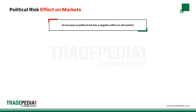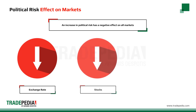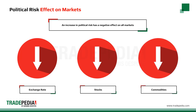An increase in political risk has a negative effect on all markets. Declining confidence and increased uncertainty lead to a drop in the value of a currency. When it comes to stocks, political risk also affects businesses negatively as stock prices decrease. The majority of commodities take the same turn and drop in value as political risks rise, with the exception of gold, which serves as a safe haven in times of uncertainty.